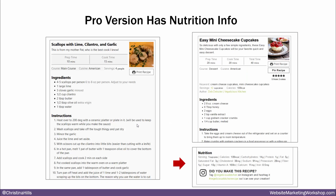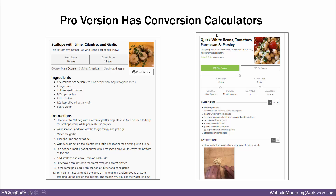I don't know all the differences between the free and the pro, but I know a couple. The pro version has nutritional information, so if you are doing this for a business site, you might want to have the nutritional information for people. Since I'm doing it for my own personal site, I don't really care, but I might upgrade at some point to get the calories, sodium, sugars, etc. The other thing the pro version has is conversion calculators. So if you want to increase servings — say it's for four — there's an easy click of a button and it will recalculate everything for a different number of people.